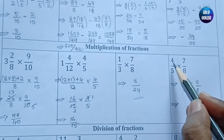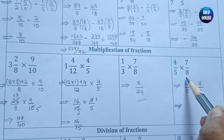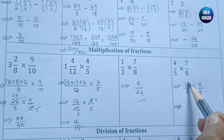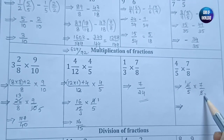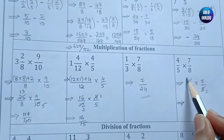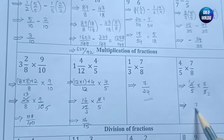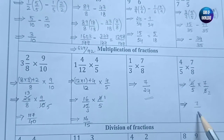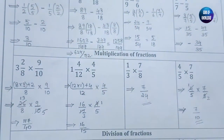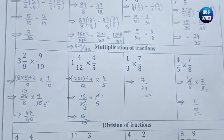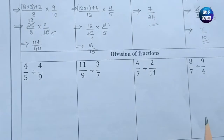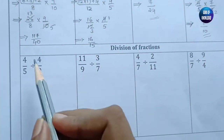The last multiplication is 4/5 multiplied by 7/8. Cancel: 4 ones are 4 and 4 twos are 8. What remains is 1 seven is 7 and 5 twos are 10, giving 7/10. This completes the multiplication of fractions section.